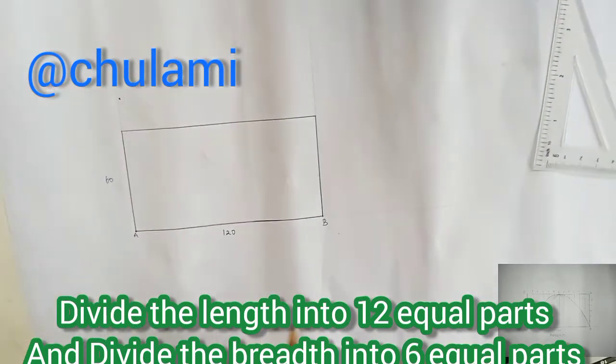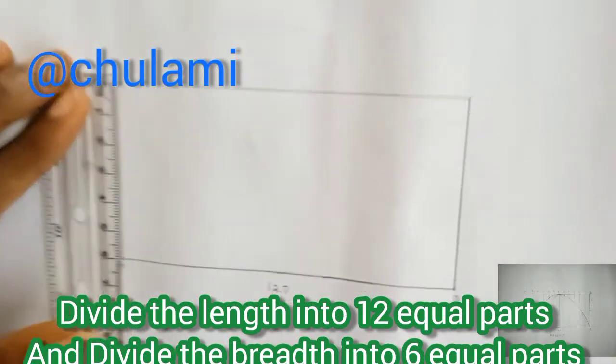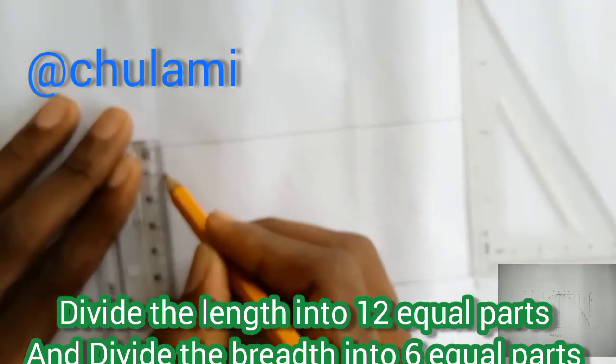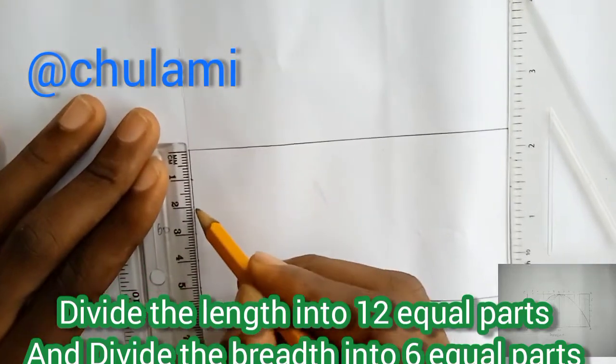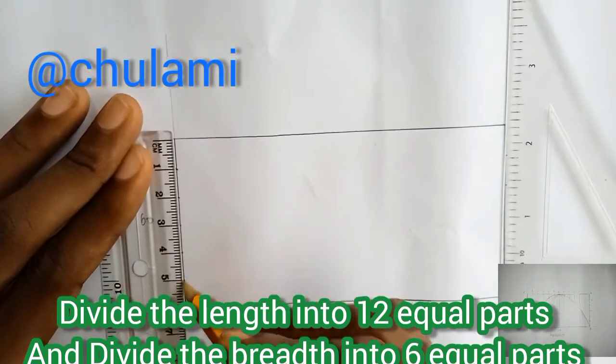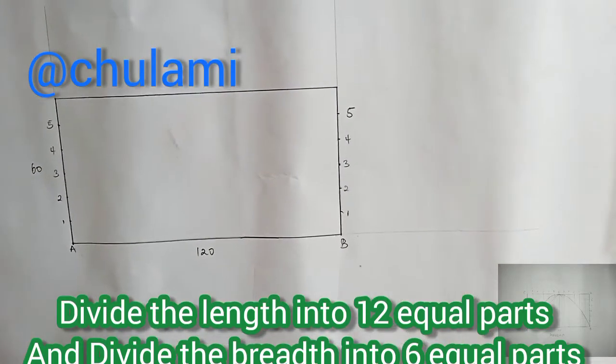So we want to divide here into six equal parts. So dividing 60 mm into six equal parts is 10 mm each. So we're measuring 10 mm each. This is 1, 1, 1, 1, 1, 1. So do the same thing for this side.